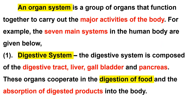The organ system is a group of organs that function together to carry out the major activity of the body. For example, there are seven main systems in the human body.